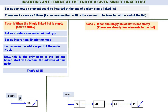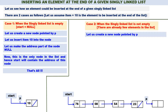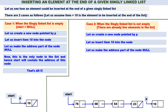Now let us come to Case 2. Same thing: let us create a new node pointed by P. We have got a new node pointed by P. Item 10 should go into the node — let us insert item 10. The address part of P should be equal to null. Let us make the address part of the node null.